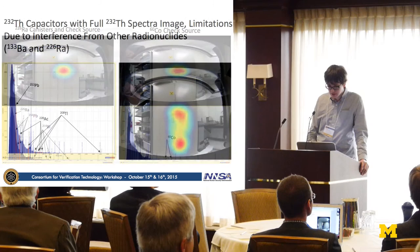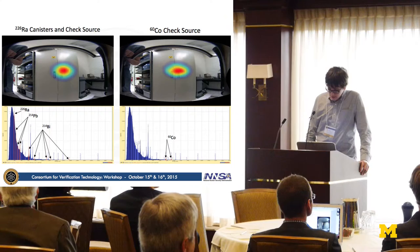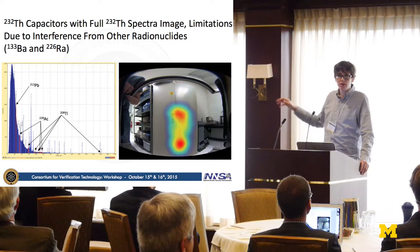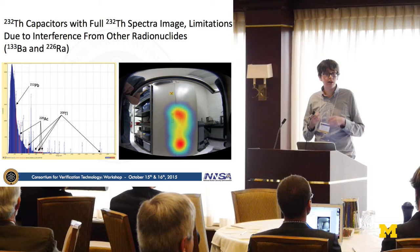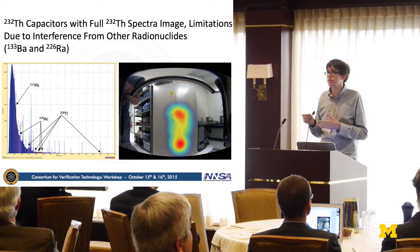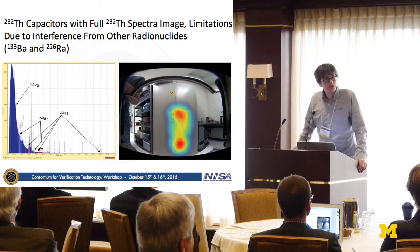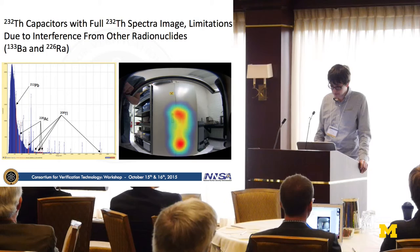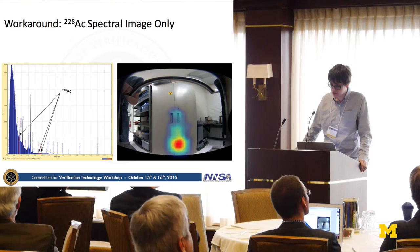Those are the images of our calibration sources, but the interesting thing was when we tried to image the thorium capacitors stored at the bottom of the cabinet. We got interference where the check sources were interfering with the thorium image, because certain radionuclides emit at very close energy levels to thorium — mostly radium and barium-133. To fix this, we cut out part of the progeny being imaged and focused only on actinium-228. This gave a much nicer image localizing to the bottom of the cabinet where the thorium capacitors are stored.